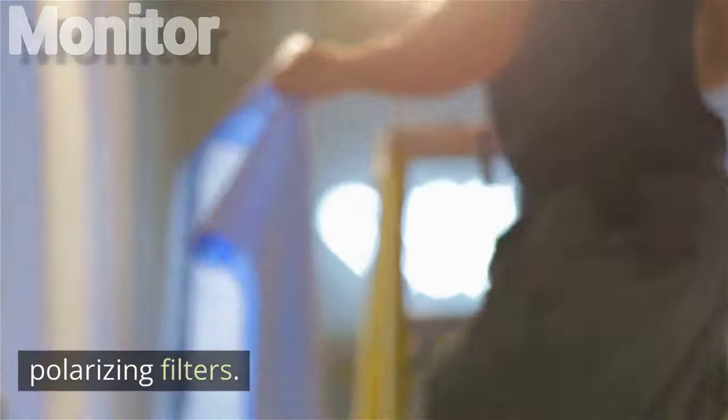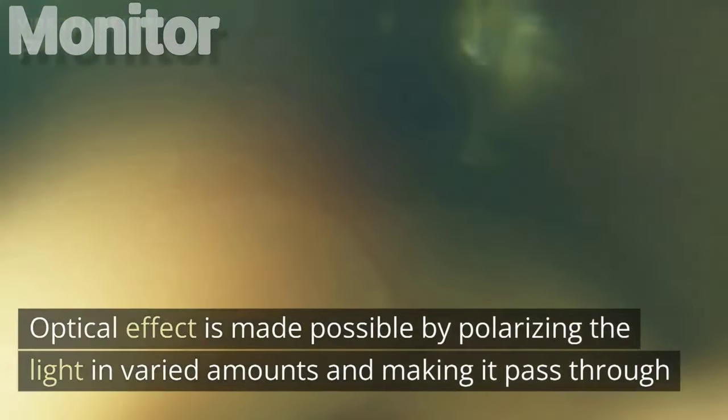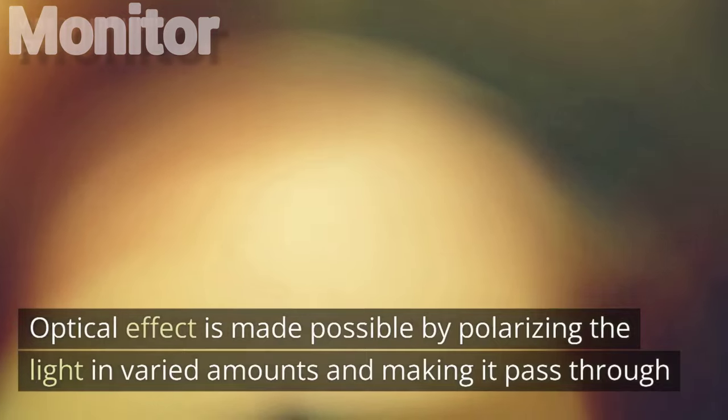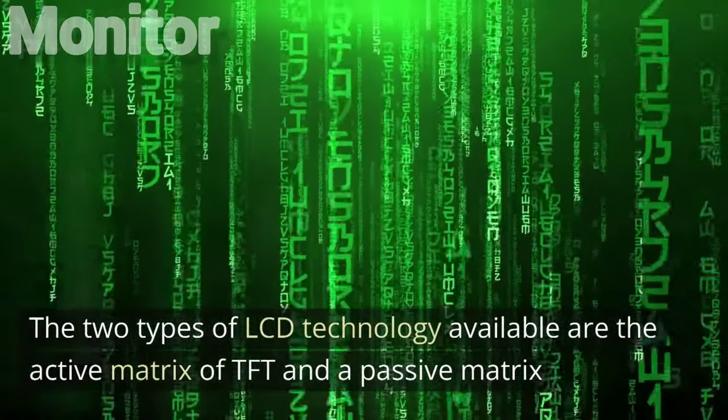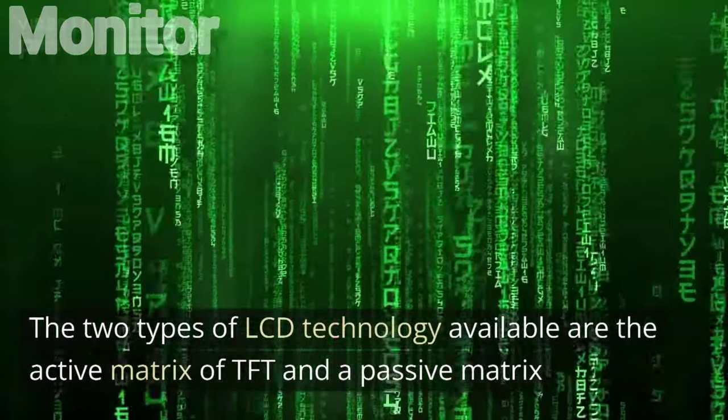The optical effect is made possible by polarizing the light in varied amounts and making it pass through the liquid crystal layer. The two types of LCD technology available are the active matrix (TFT) and passive matrix. Passive matrix has a slow response time and is slowly becoming outdated.